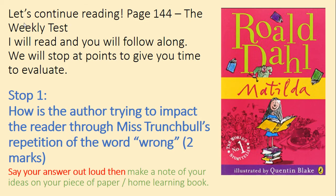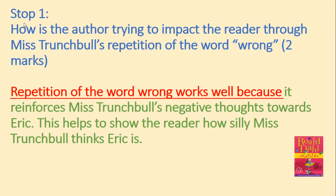We're going to pause here to have a look at our first question. How is the author trying to impact the reader through Miss Trunchbull's repetition of the word 'wrong', for two marks? Say your answer out loud and then make a note of your ideas. Repetition of the word 'wrong' works well because it reinforces Miss Trunchbull's negative thoughts towards Eric. This helps to show the reader how silly Miss Trunchbull thinks Eric is. Remember, we haven't covered evaluating yet, so your answers may be different.